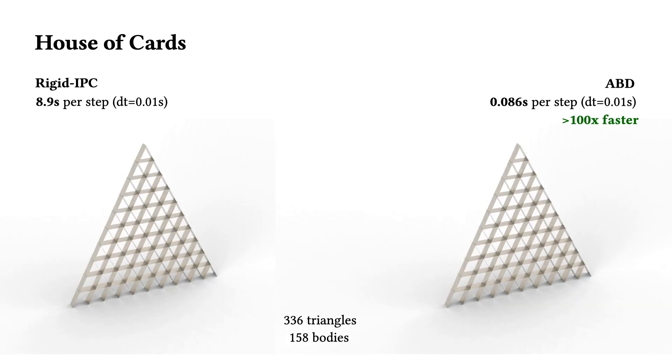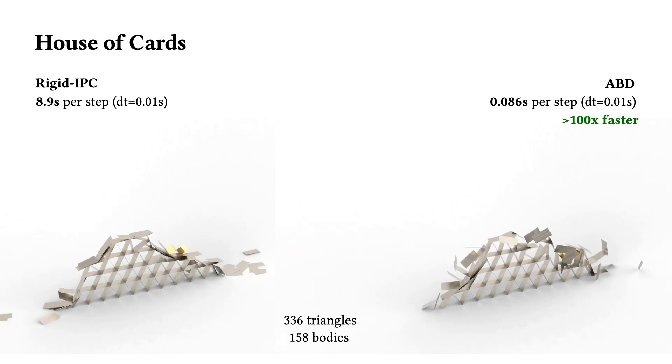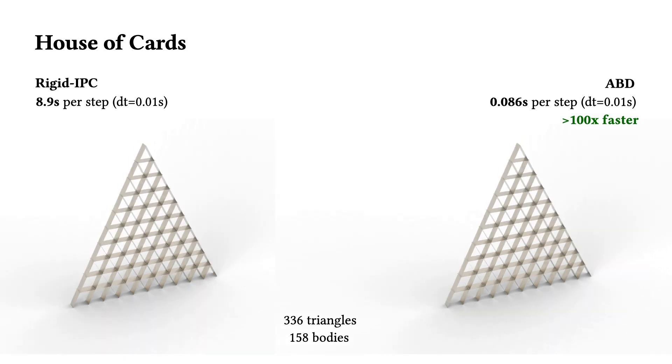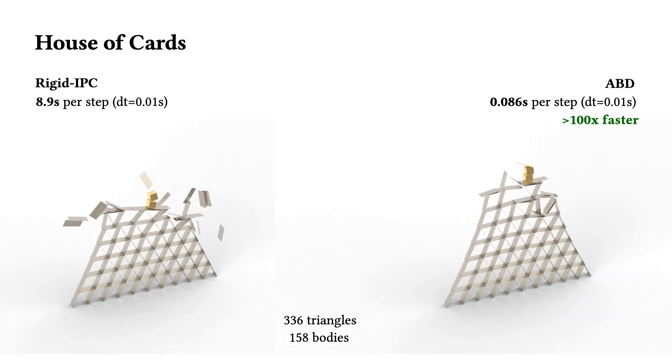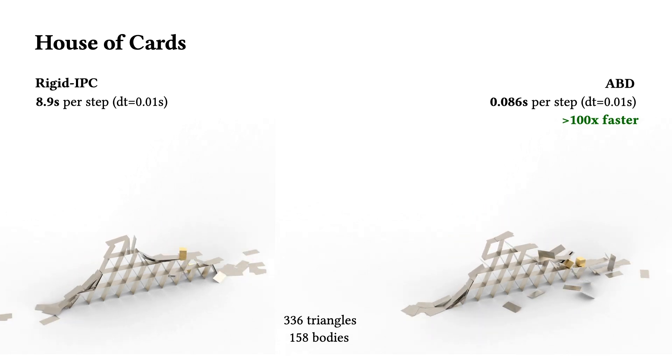Since ABD is based on a stiffness model for its constitutive behavior, we can also apply ABD to simulate stiff elastic responses. For example, this stiff ABD card house on the right can lightly oscillate while still accurately modeling friction to correctly capture stability. Here, ABD provides a more than 100 times faster runtime when compared to rigidIPC.